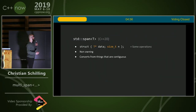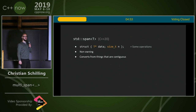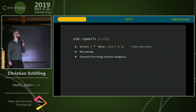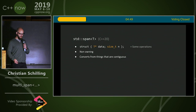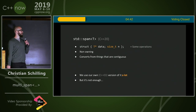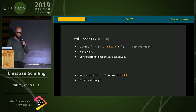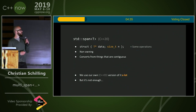In C++20 there will be a new thing called a span, which is just a reference to a contiguous block of memory. We have been using something basically exactly like this for quite a while, and we use it a lot. It's really great, but sometimes it's not enough for the use case.